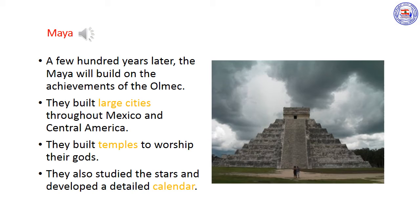Maya. A few hundred years later, the Maya built on the achievements of the Olmec. Between about AD 250 and 900, the Maya built large cities in Mexico and Central America. In these cities they built stone temples to worship their gods. They studied the stars and developed a detailed calendar. They also kept written records that scholars still study today to learn about Maya history. However, scholars do not fully understand why Maya civilization suddenly collapsed sometime after 900.